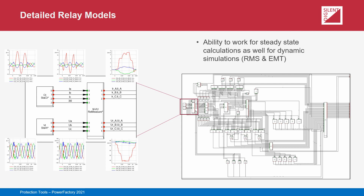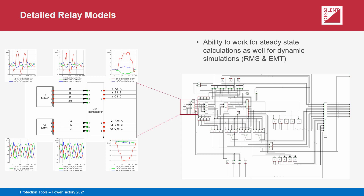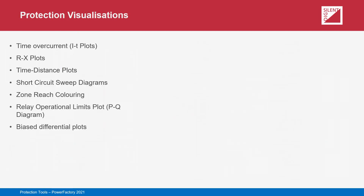All signal values used in the relay model can be accessed after carrying out calculations, for example short circuit calculations, or even monitored during simulations. This can be used to provide insight into the behavior of a relay model during a particular study. For simulations, plots are available to visualize the monitored signals. Signal values can also be viewed in tabular format.